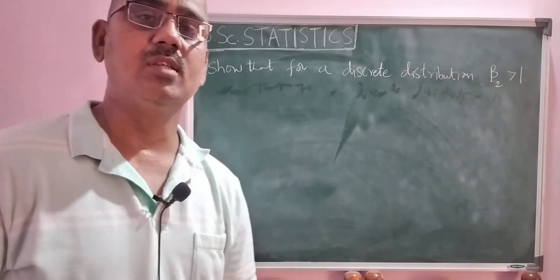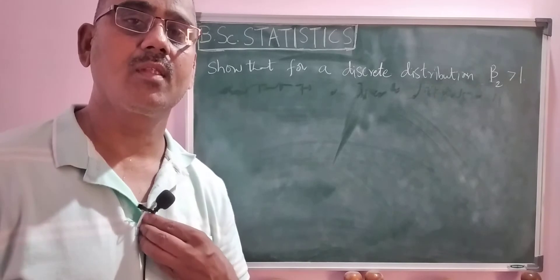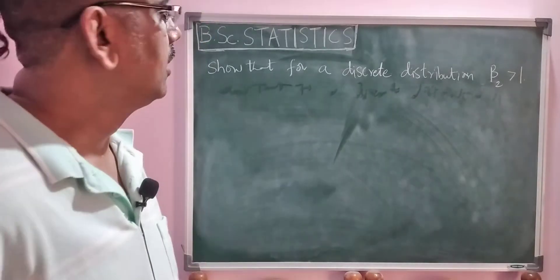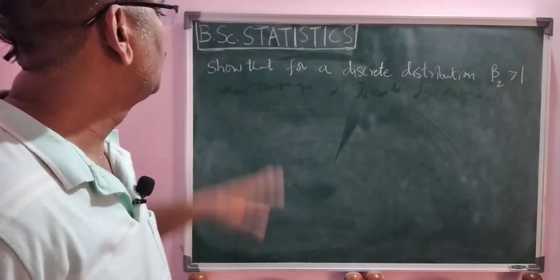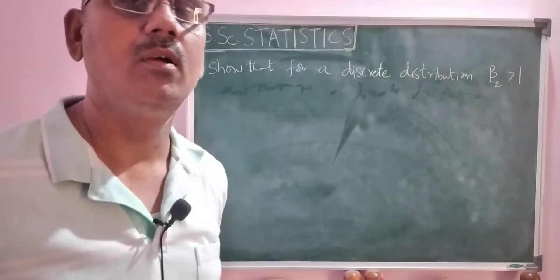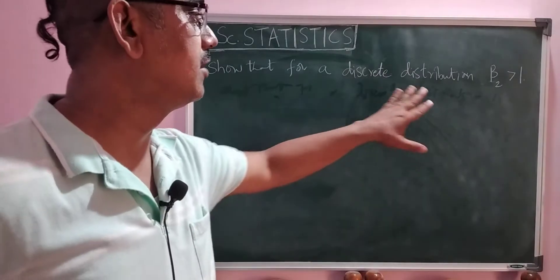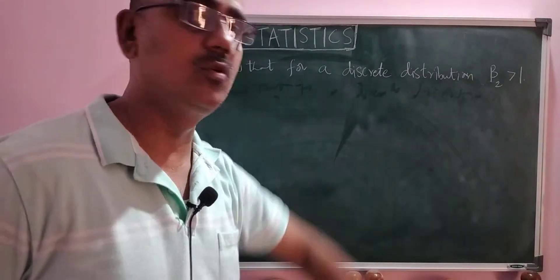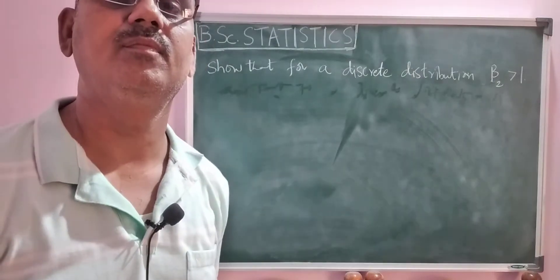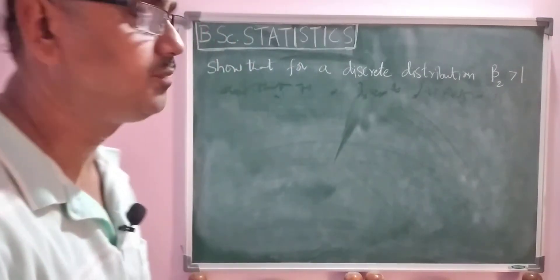Welcome to B.Sc. Statistics students. In this lesson I discuss one particular result: show that for a discrete distribution, beta 2 is greater than 1.